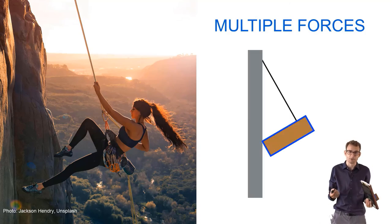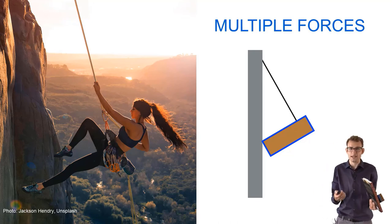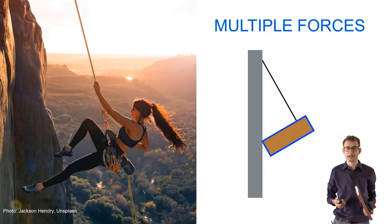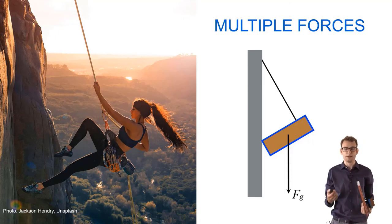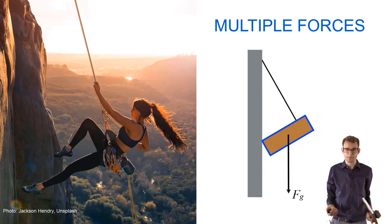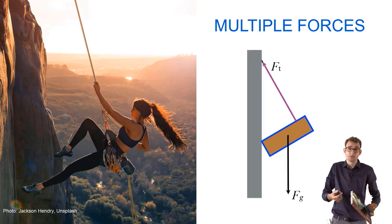And to study this, we can also make a cartoon of that. So I'm going to draw her body as a simple square block or rectangle block. I'm going to draw the rope as a simple line. And so what do we have? We have the force of gravity pulling down. We have a tension force in the rope.